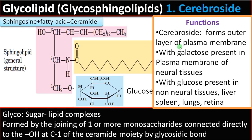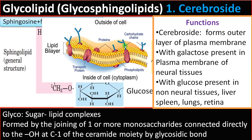Cerebroside forms the outer layer of the plasma membrane. If galactose is present, it is very common in neural tissues. With glucose, it is very common in non-neural tissues like liver, spleen, lungs, retina, etc.